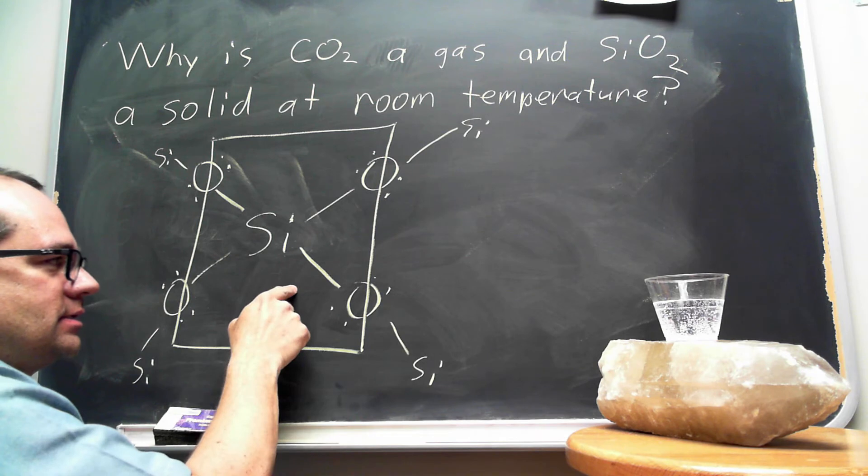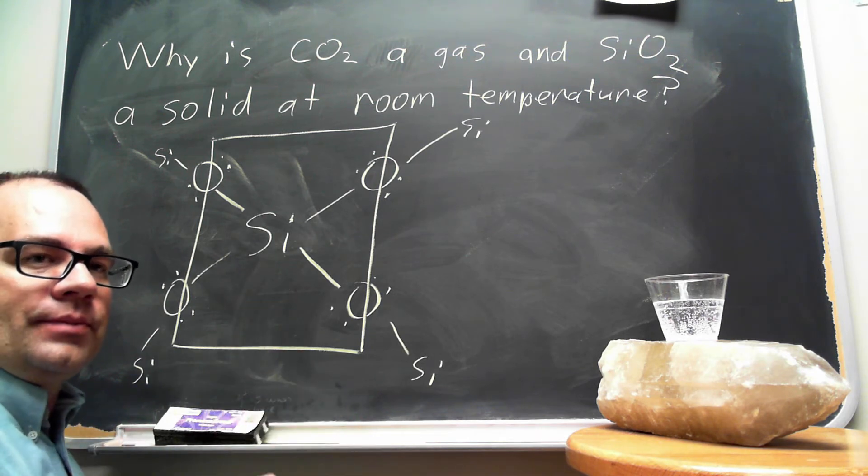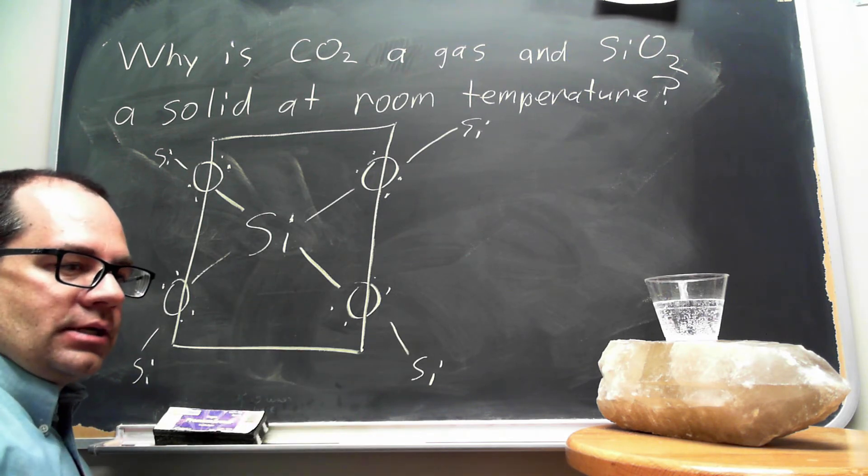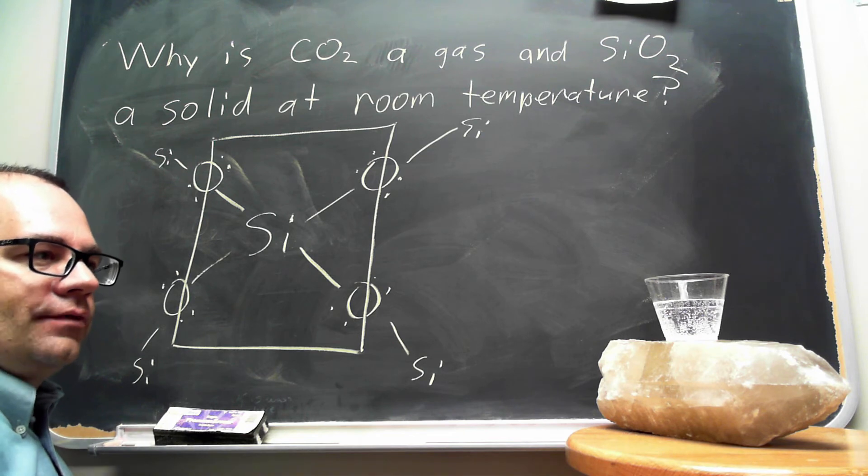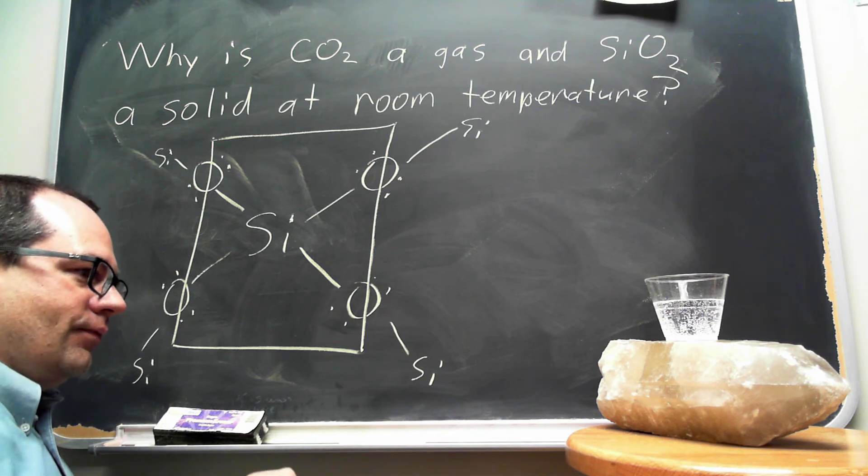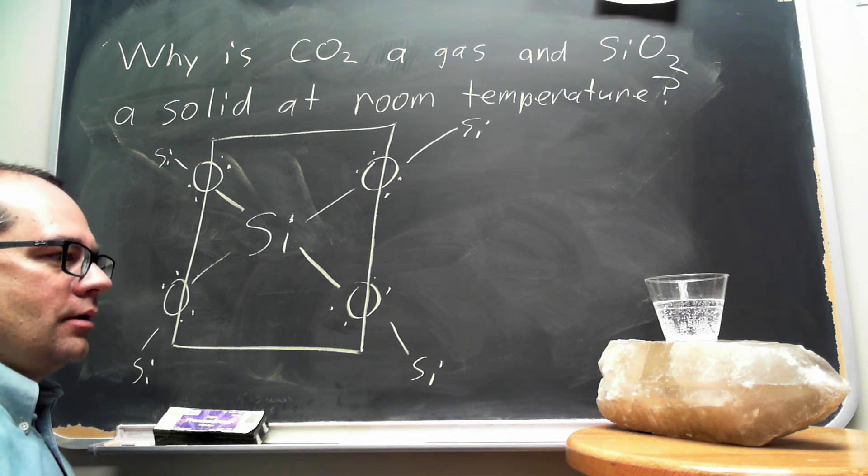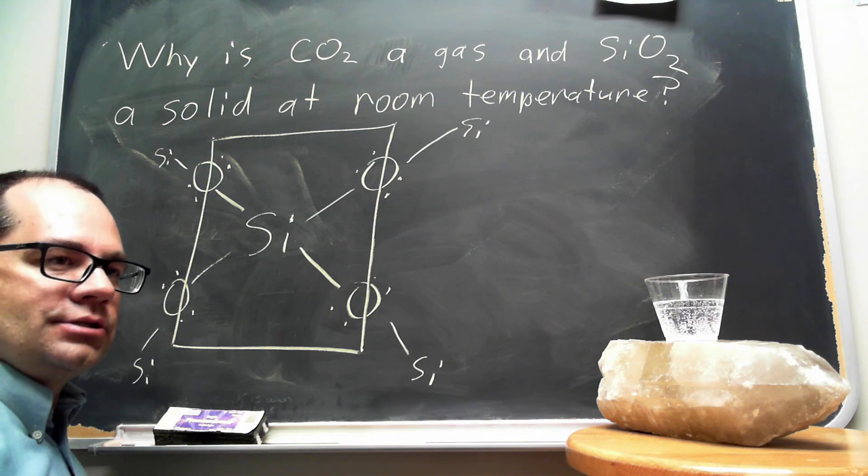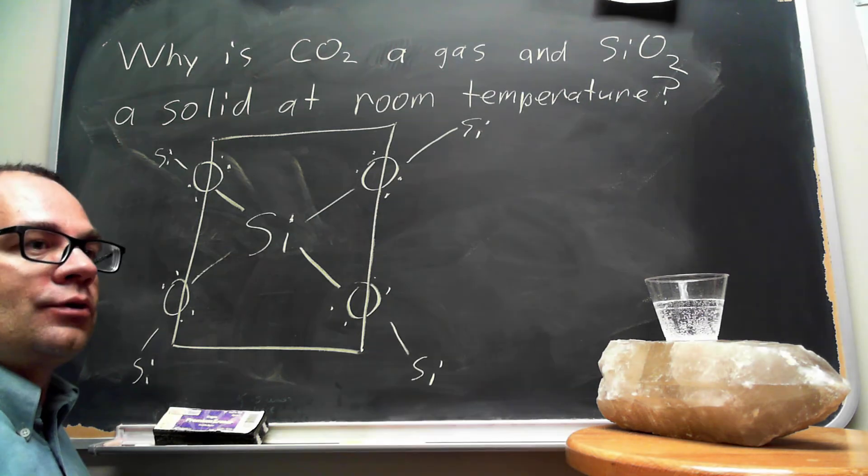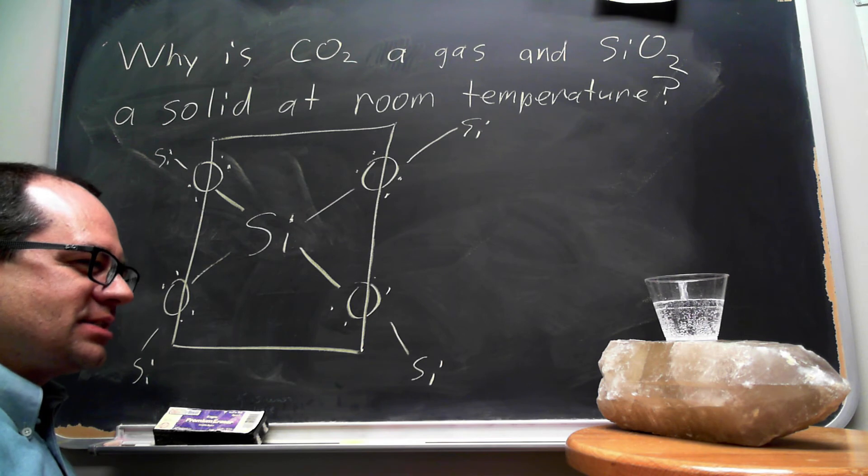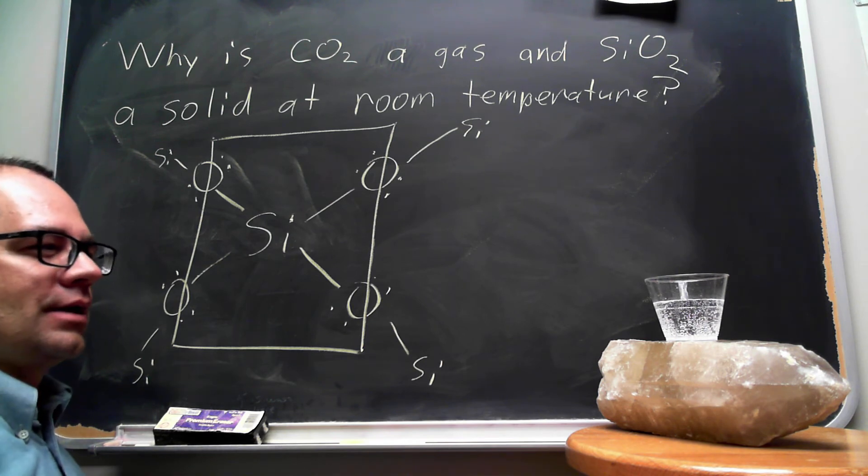Now the reason silicon does this rather than forming double bonds to oxygen is that the silicon atoms are large enough that they cannot form pi to pi interactions with other atoms very easily. In other words, silicon just doesn't tend to form double bonds quite as readily as carbon.